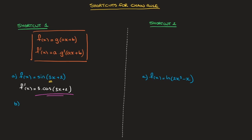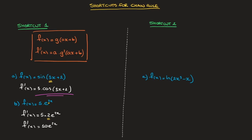Another example: if f of x equals 5 times e of 2x. Once more we're dealing with a composite function, and the inner function, which is 2x, is a linear function. We could think of 2x as ax plus b where b equals 0. So we make a note of the 2, and using the fact that the derivative of e of x is just e of x, we can quickly state that f dash of x is equal to 5 times 2 e of 2x. Simplifying, f dash of x equals 10 e of 2x. And we're done.